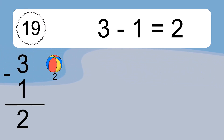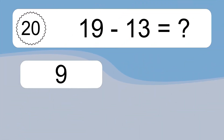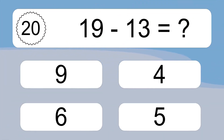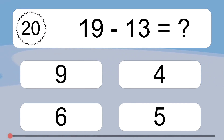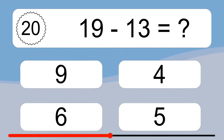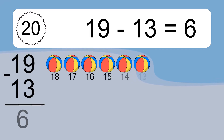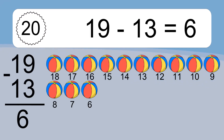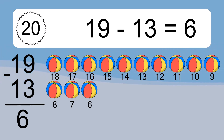19 minus 13 equals what? 19 minus 13 equals 6. Let's count it: 18, 17, 16, 15, 14, 13, 12, 11, 10, 9, 8, 7, 6.